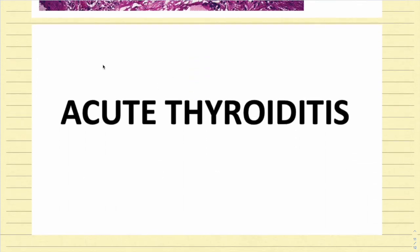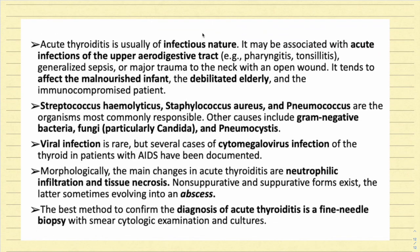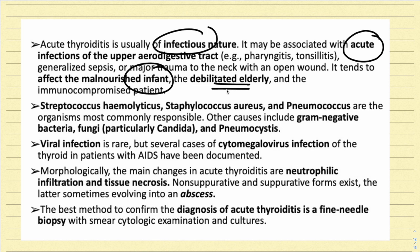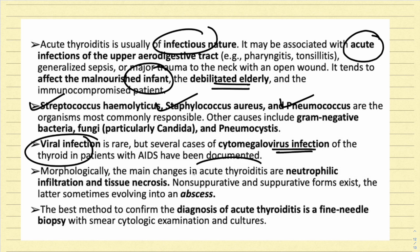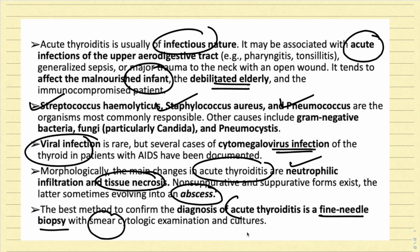The last type is acute thyroiditis, usually infectious in nature, associated with acute infections of the upper aerodigestive tract like pharyngitis and tonsillitis. It tends to affect malnourished infants, debilitated elderly, and immunocompromised patients. Common causative organisms include Streptococcus haemolyticus, Staphylococcus aureus, and Pneumococcus. Other organisms include gram-negative bacteria, fungi — particularly Candida and Pneumocystis. Viral infection is rare; cytomegalovirus has been implicated in HIV patients. Morphologically, the main changes are neutrophilic infiltration and tissue necrosis, sometimes evolving into an abscess. The best method to confirm diagnosis is fine needle aspiration biopsy with cytological examination and cultures.